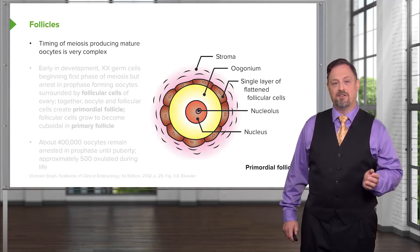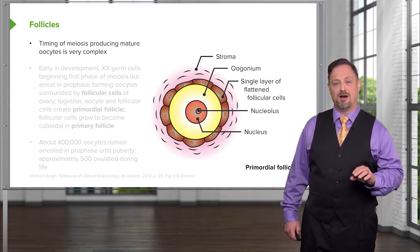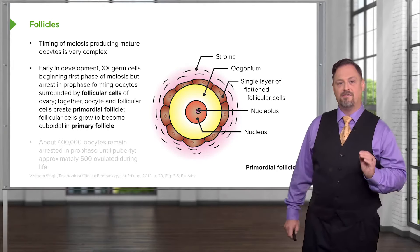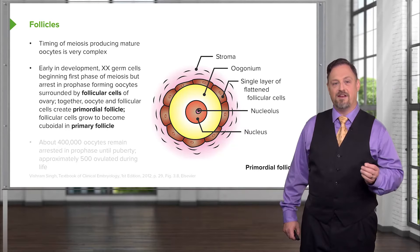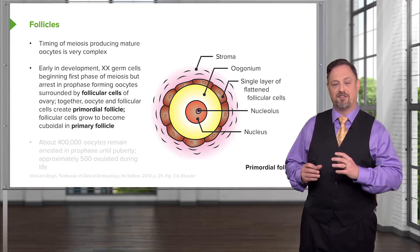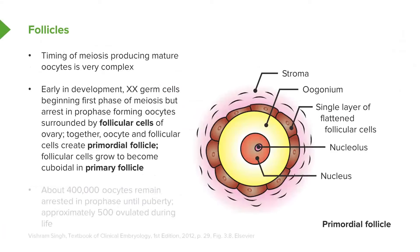The timing of meiosis involved in oogenesis is very complicated and is tied to development of the egg within a structure called the follicle. Early on in development, XX germ cells are going to begin the phase of meiosis but arrest in prophase — they're not going to get done with the first step of meiosis until well later. At this time, they are within the ovary and are surrounded by a group of cells called follicular cells.